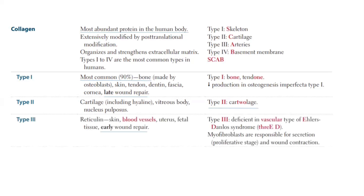Now for Type 3 collagen: always remember that the skin has most of the collagen, and skin is associated with odd-numbered collagen types — 1, 3, 5, 7. You can see the skin consists of many collagen types. The other most important association is blood vessels — you can see blood vessels in Type 3 collagen. If the patient has a deficiency in Type 3 collagen, the disease we see is Ehler-Danlos syndrome.